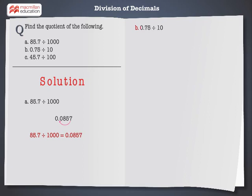0.75 divided by 10. The decimal point will be moved one place to the left as it is divided by 10. Hence the quotient of 0.75 divided by 10 is 0.075.